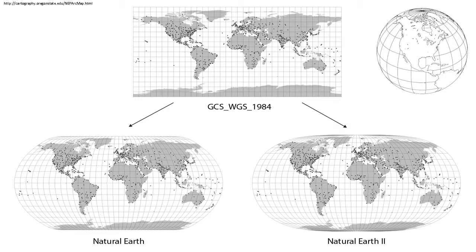First, we will review something about the Earth, the latitude and longitude coordinate system and maps. The map on the top center looks like the map we are using in our online activity. The latitude and longitude graticule grid lines are rectangular.